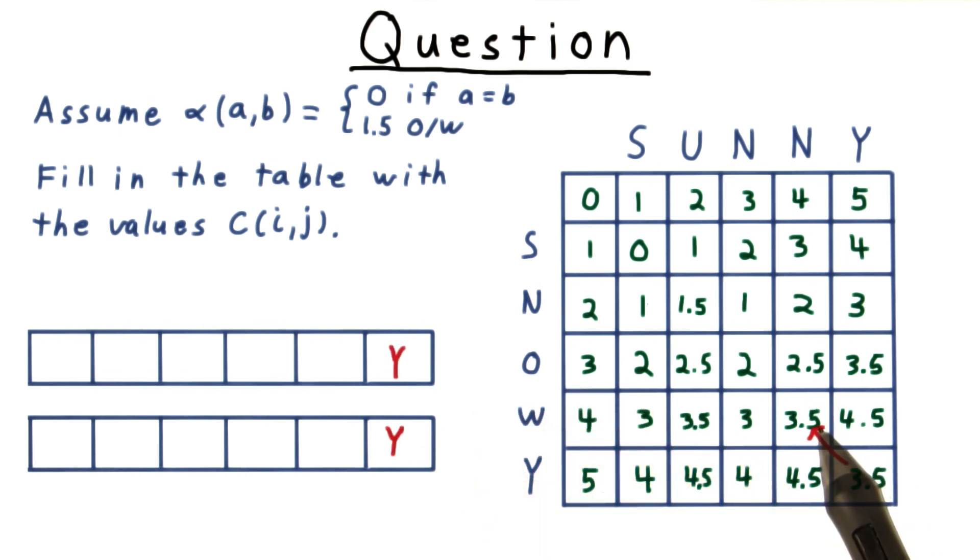Next, we have 3.5, which could have come from either of these two neighbors here. Let's choose this one for now. That corresponds to leaving w unmatched, so we'll write that down in our alignment.